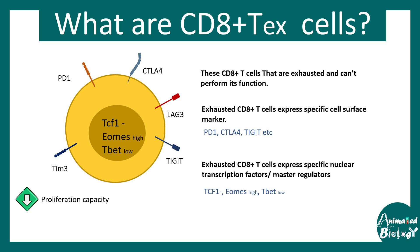The proliferative capacity of exhausted T cells is low, and their cytokine secretion capacity is also low. The main job of these T cells is either to destroy pathogens or tumor cells, or to secrete cytokines. So if all of these aspects are compromised, then they are exhausted and not functionally optimal.